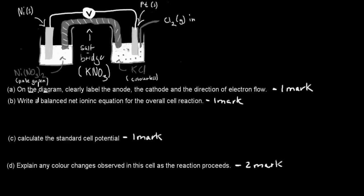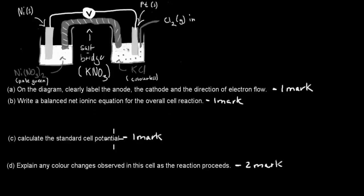Part A: on the diagram clearly label the anode, the cathode, and the direction of electron flow. Part B: write a balanced net ionic equation for the overall cell reaction. Part C: calculate the standard cell potential. Part D: explain any color changes observed in the cell as the reaction proceeds. Part D is worth two marks; the others are one mark each.